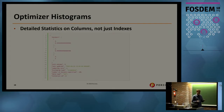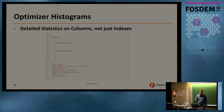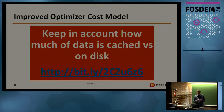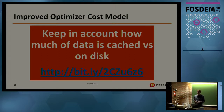Optimizer histograms give us detailed statistics on columns, not just indexes, allowing the optimizer to make much better choices in many cases. Interestingly, these statistics are stored as JSON, making them much more extensible - allowing the MySQL optimizer team to add more statistics or different histogram formats without a complete redesign. There's also an improved cost model that accounts for how much data is cached versus needs to be fetched from disk, which can be very important for getting better execution plans for some workloads.